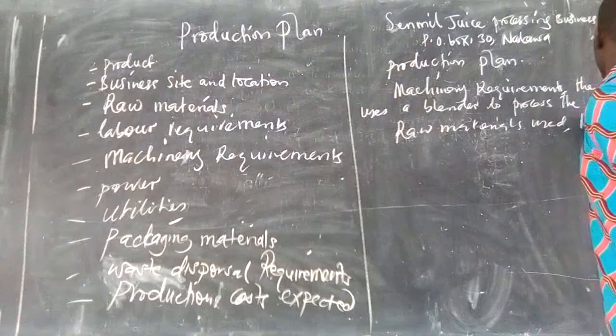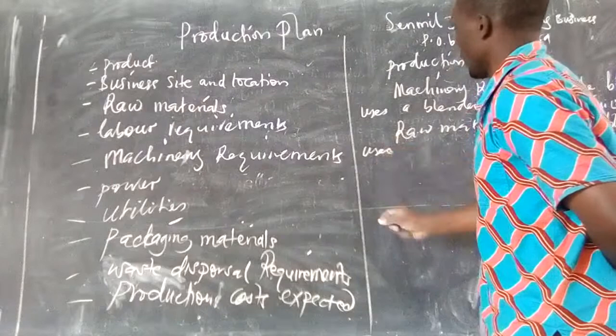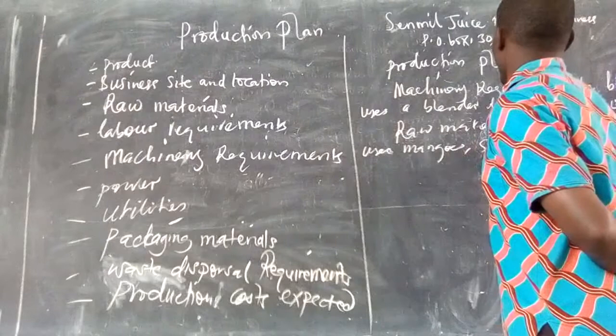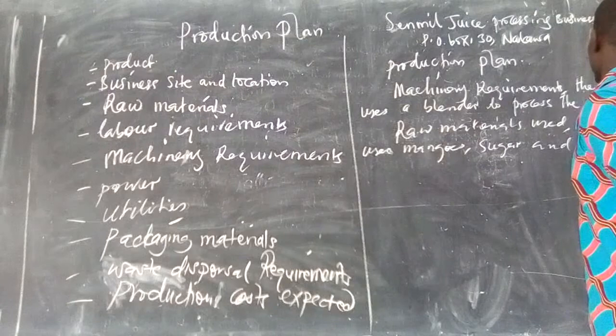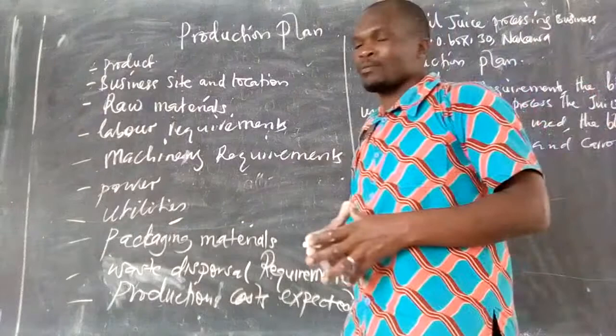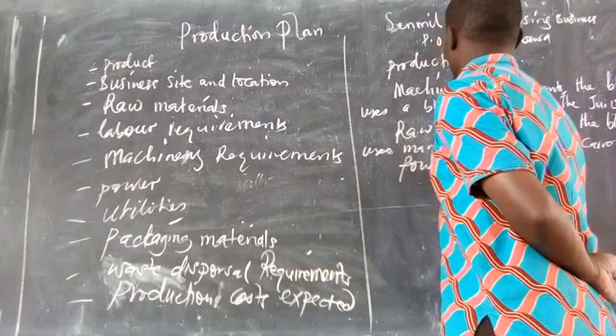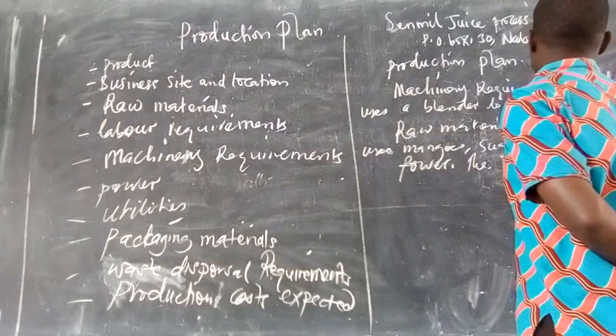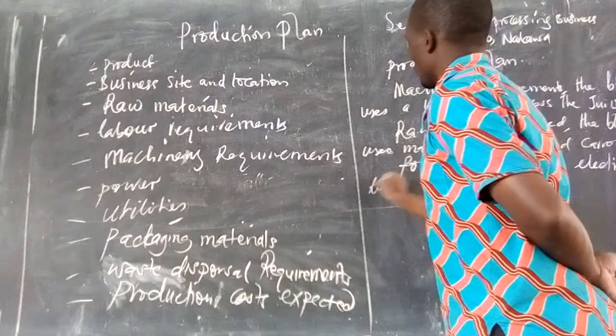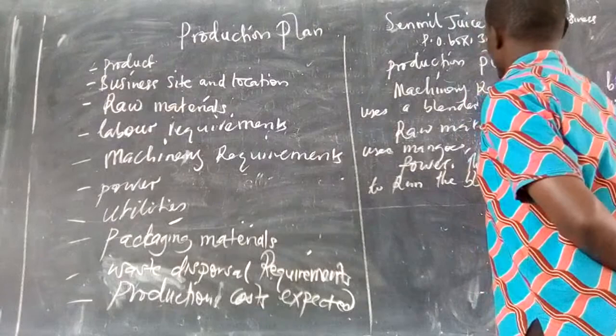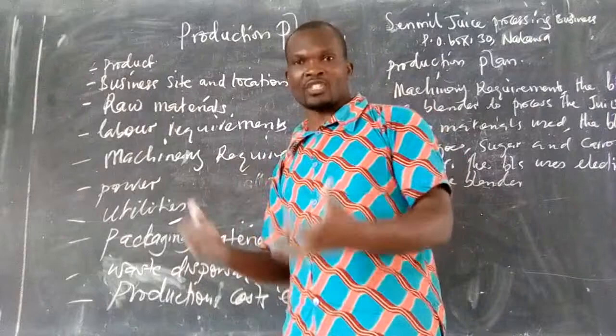The business uses mangoes, sugar, and carrots — maybe those are the raw materials used in mixing the juice. Select another item: power. The business uses electricity to run the blender.